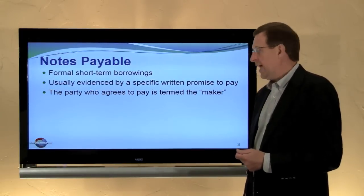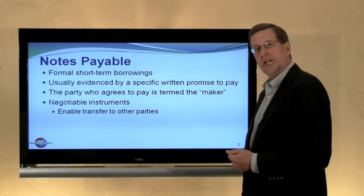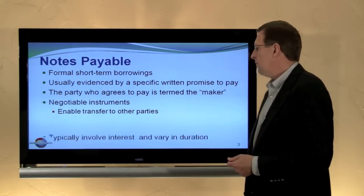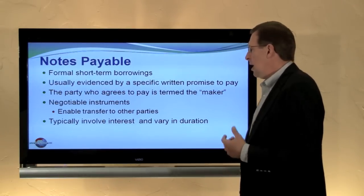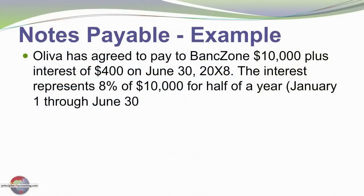The party who agrees to pay is termed the maker of the note. These notes are typically structured as negotiable instruments, enabling the holder of the note to transfer it to another party for consideration. In addition to the face amount of the note, it would also typically involve interest for the appropriate amount of time. In this case, the maker has agreed to pay Bank Zone $10,000 plus interest of $400 on June 30th, 20X8. This interest represents 8% of the $10,000 note for half a year, assuming the note was created on January 1 and runs through June 30th.